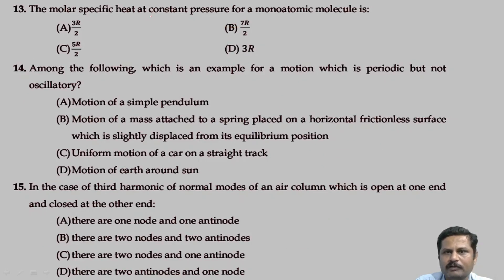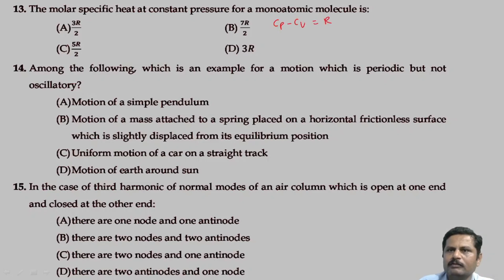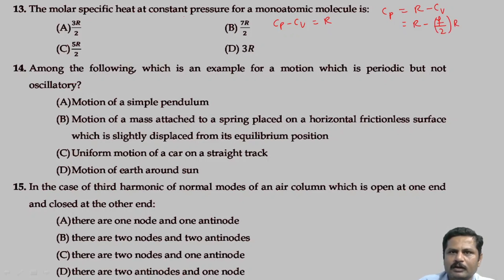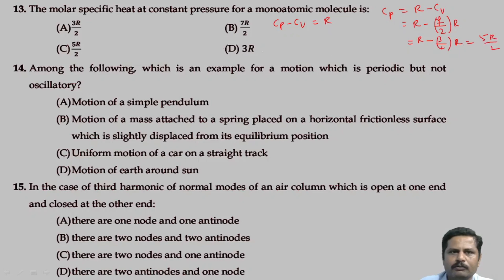The molar specific heat at constant pressure for a monoatomic molecule. From Mayer's equation, Cp minus Cv equals R. We need to find Cp, so Cp equals Cv plus R. We know Cv equals (f/2)R, where f is the degree of freedom. For a monoatomic gas molecule, the degree of freedom is 3. Substituting: Cp equals R plus (3/2)R equals 5R/2. So option C is the right answer.